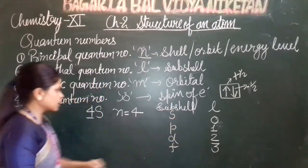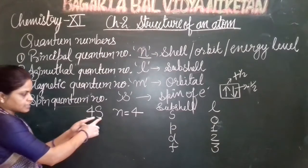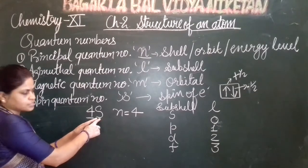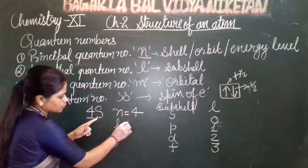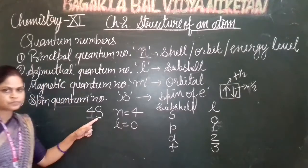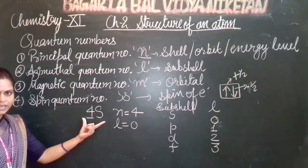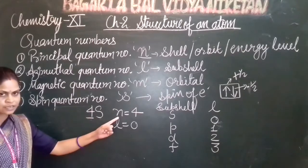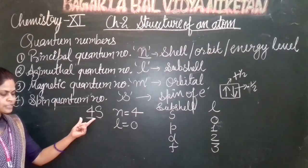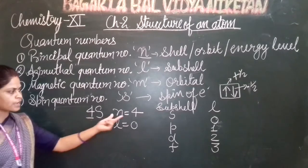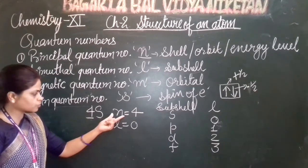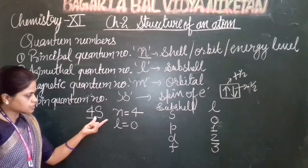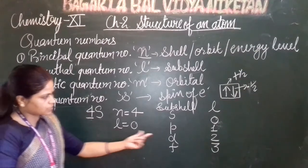For the 4s example, since the sub-shell is s, l equals 0. The number before the sub-shell gives us n, which is the principal quantum number, and the sub-shell letter gives us the value of l.